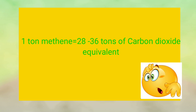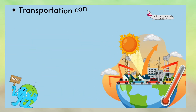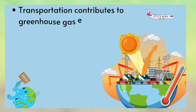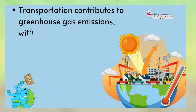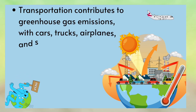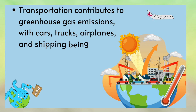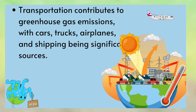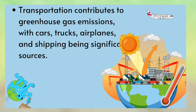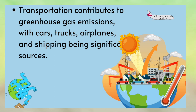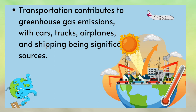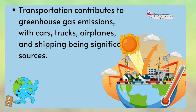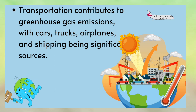One ton of methane is equal to 20 to 36 tons of carbon dioxide. Transportation also contributes to greenhouse gas emissions, with cars, trucks, airplanes, and shipping being significant sources of climate change. Transportation generates about one-fourth of global carbon dioxide emissions.